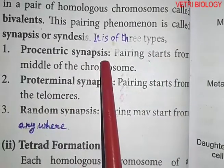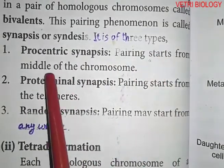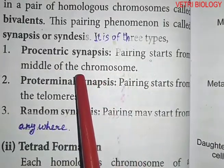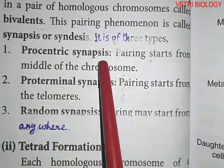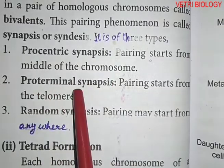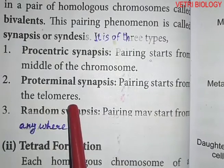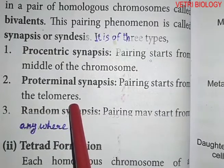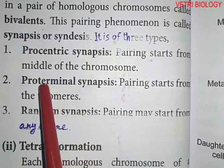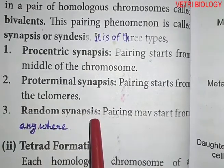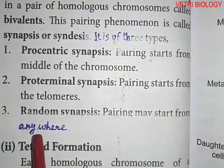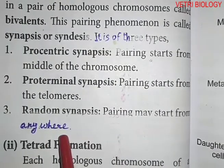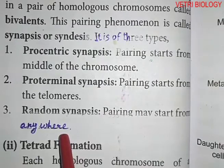Synapsis is of three types. Procentric synapsis: pairing starts from the middle of the chromosome. Pro-terminal synapsis: pairing starts from the telomeres, that is, the tip portion of the chromosomes. Random synapsis: pairing may start from anywhere along the chromosome.